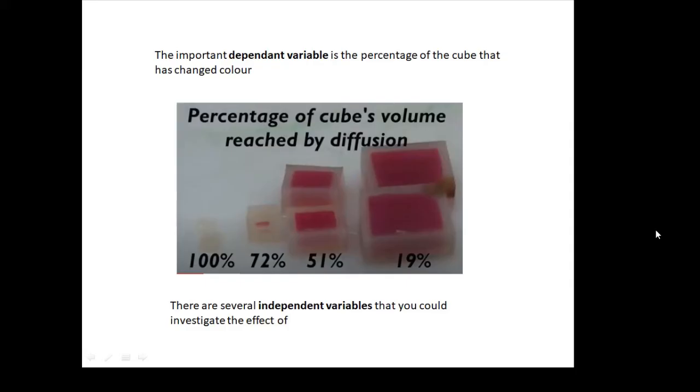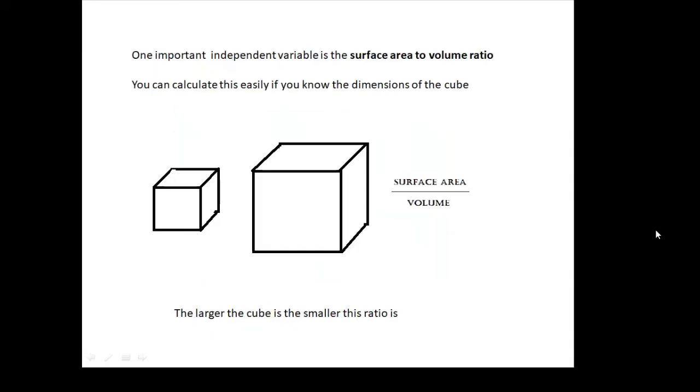There are several independent variables you could investigate. One very important independent variable is the surface area to volume ratio. Not just the surface area—a bigger cube will have a bigger surface area, but it will also have a bigger volume. What's important is the surface area divided by the volume. That's the surface area to volume ratio.